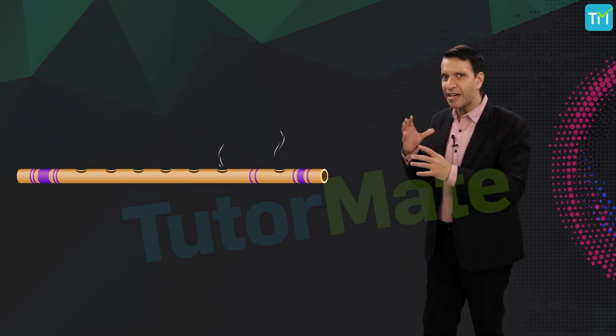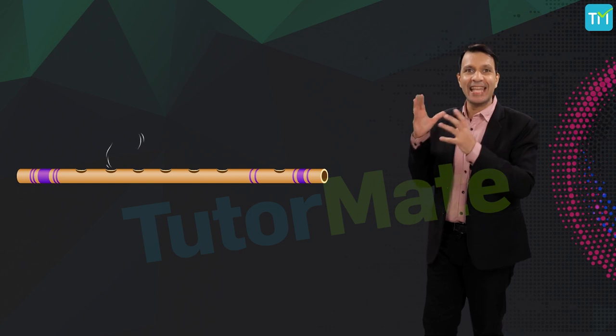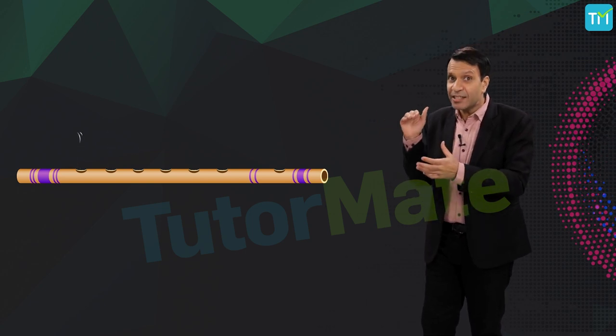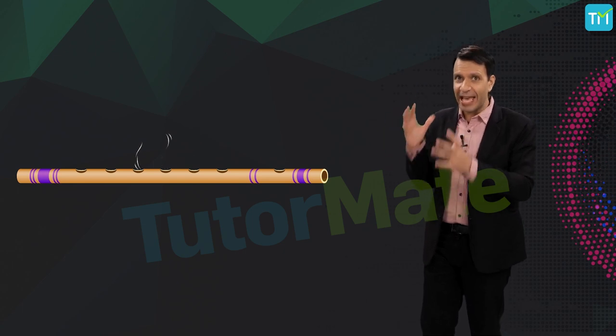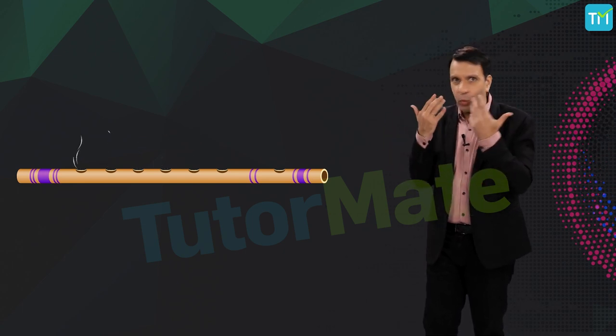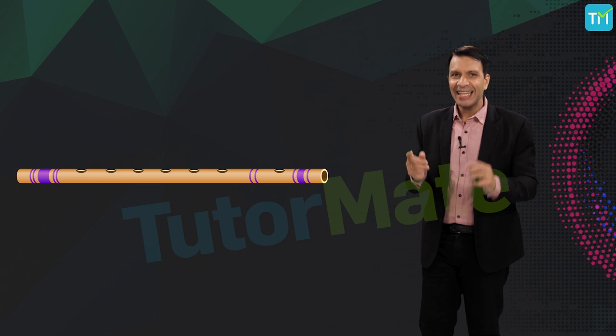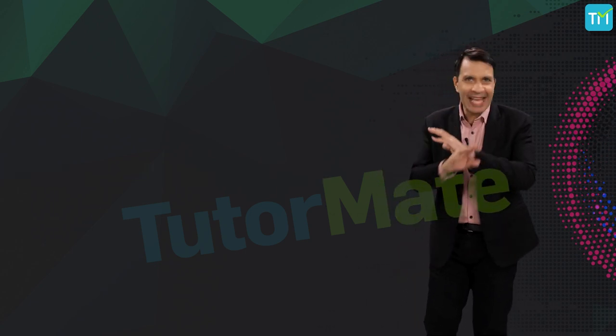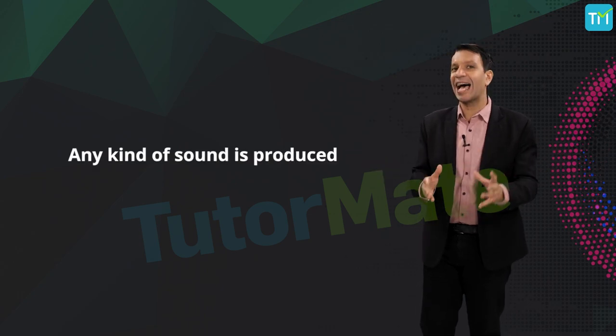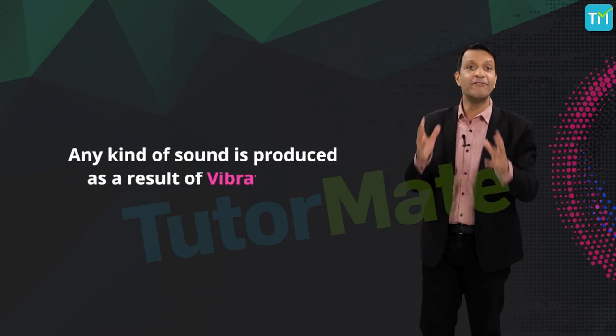Whenever air is blown into the flute, it causes the air molecules inside the flute to vibrate. And this vibration of air molecules is something we can't see, but it still produces a sound that we are able to hear. So, any kind of sound is produced as a result of vibrations.